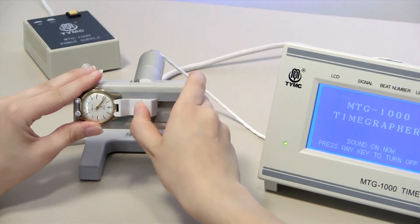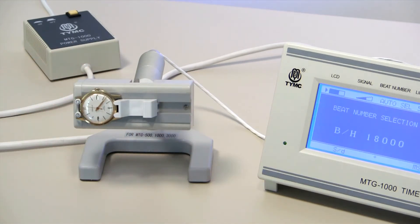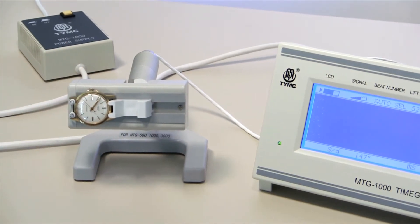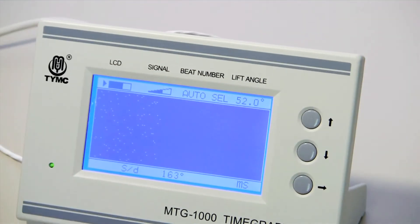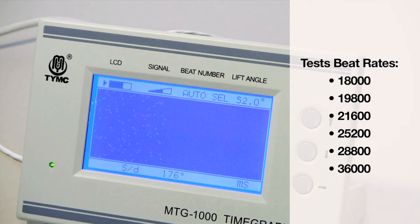This watch timer tester automatically identifies the ideal beat rate of the watch you are testing. Or you can set it to test for a particular beat rate. With this tester, you can test watches with beat rates from 18,000 to 36,000 beats per minute.